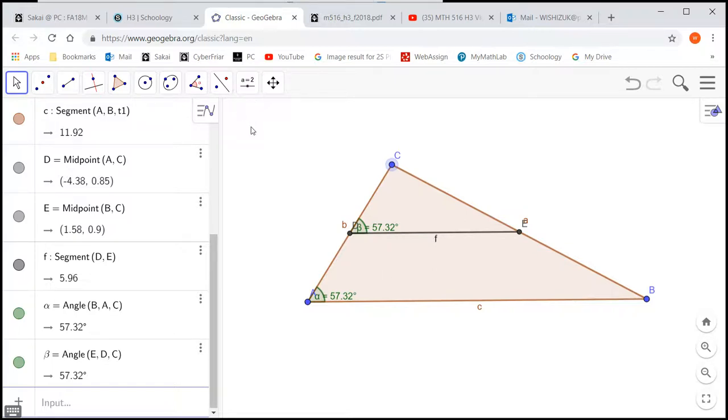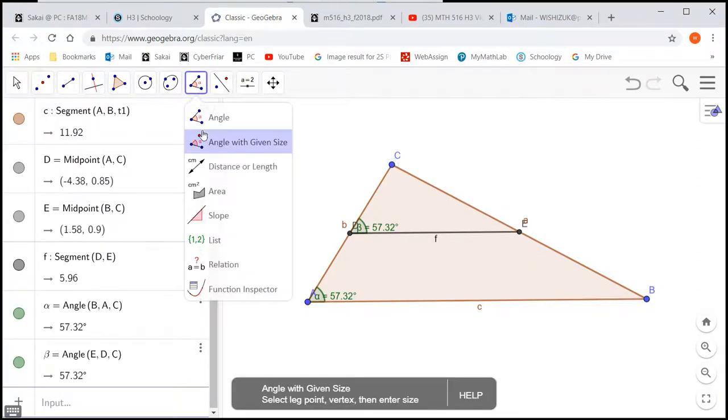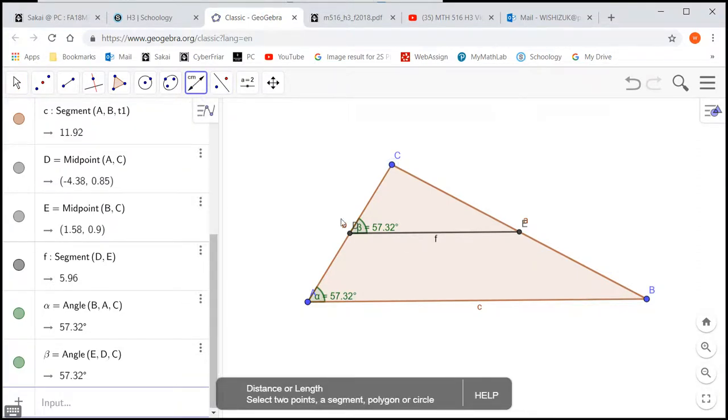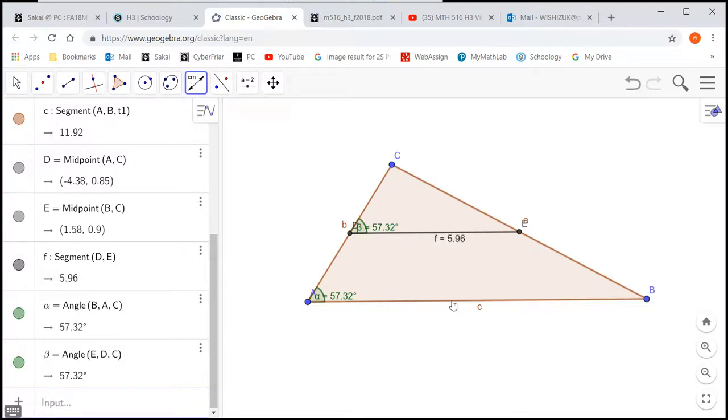Actually, we need to find the length too. So if you look at the length, I'm going to go to the distance length tool and then you can click on here and click on here. You can see that this is going to be one half of that guy.